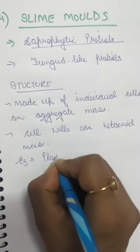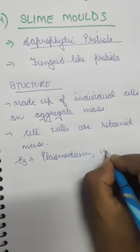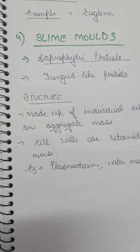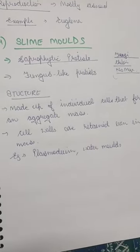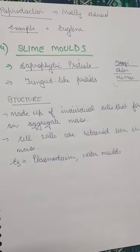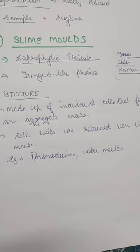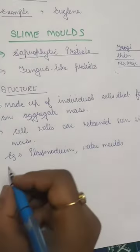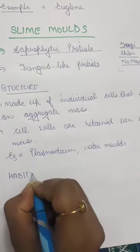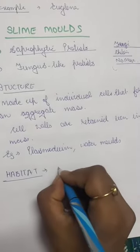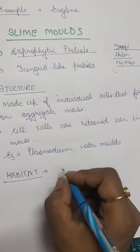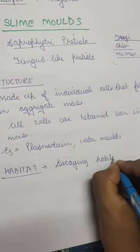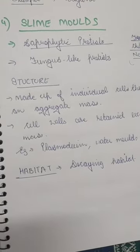An example of slime molds is Plasmodium, which is also the major cause of malaria. The mosquito is just a carrier — a vector — that carries this Plasmodium, but the main cause of malaria is Plasmodium. Slime molds live in moist habitats and survive on decaying organic matter, so they are found in moist, decaying habitats.